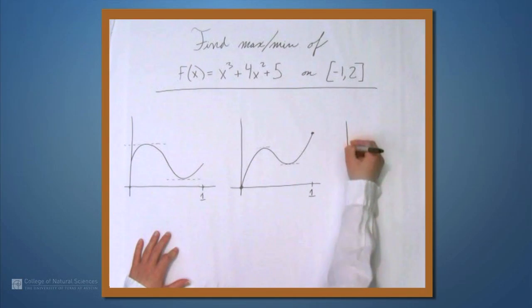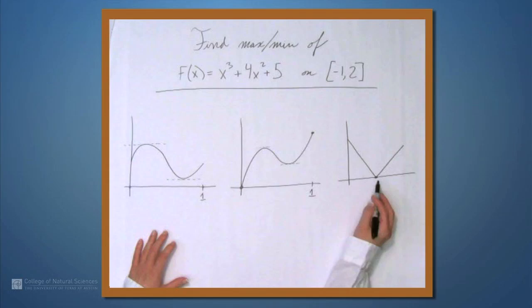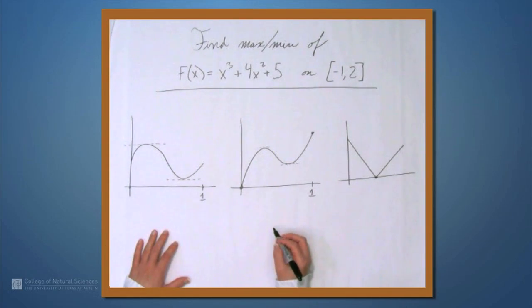There's actually one other thing that we're going to have to check. If we have a function that looks like this, something like an absolute value, well, the minimum occurs here, but the derivative doesn't exist here. So, we also have to check places where the derivative doesn't exist. There may be none, but if there are any, we have to check them.